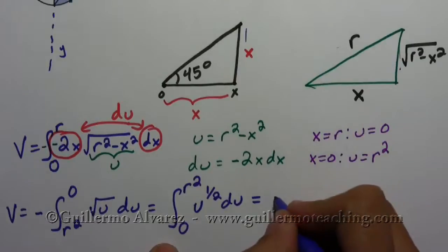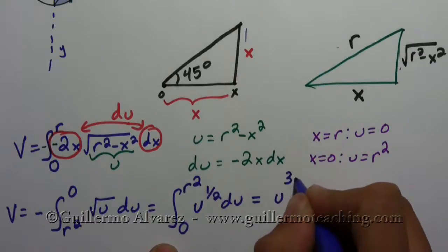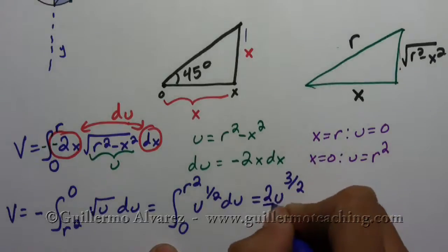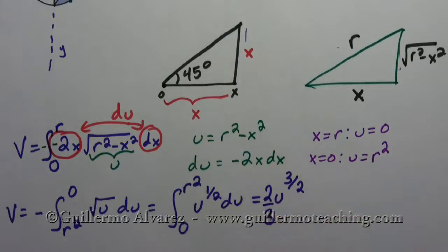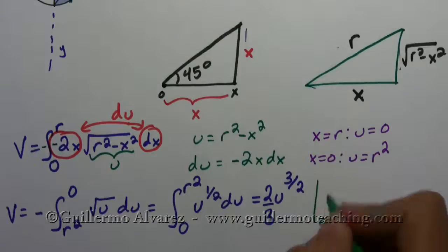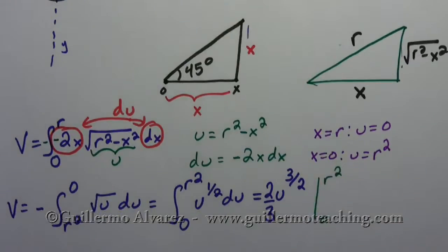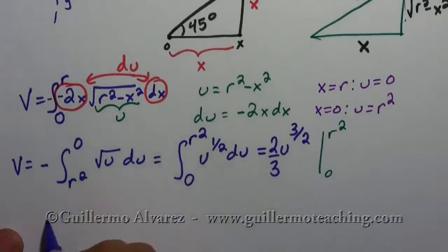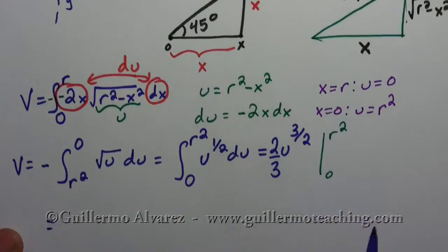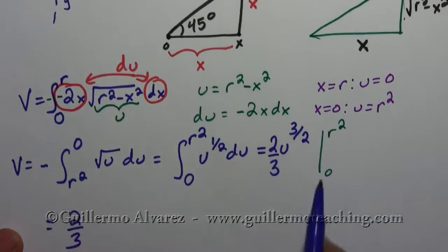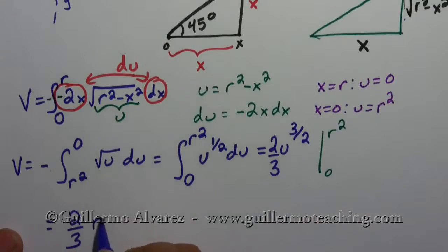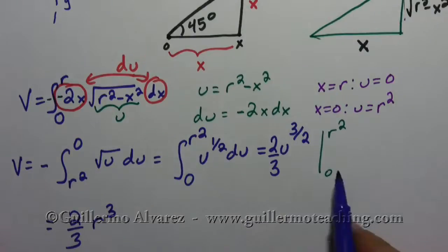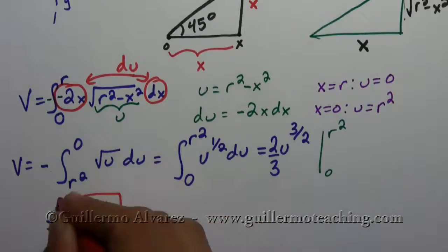And so then what I have is the anti-derivative is u to the 3 halves times the reciprocal, which is 2 thirds. And this is going to be evaluated from 0 to r squared. Okay. And so let's plug it in. So here what I have then is 2 thirds. If I plug in r squared, I would end up with r to the 3rd, minus if I plug in 0, I would just get 0. And so this is the answer in the end.